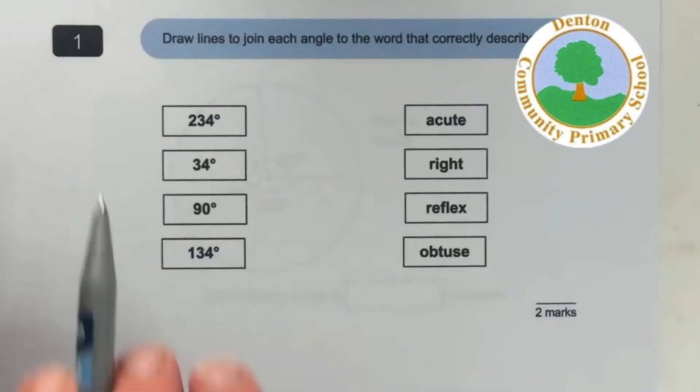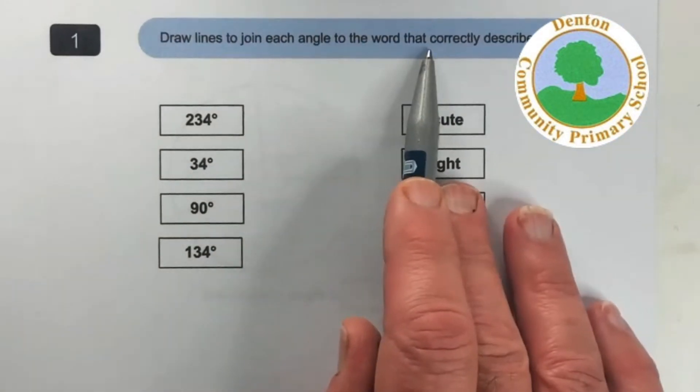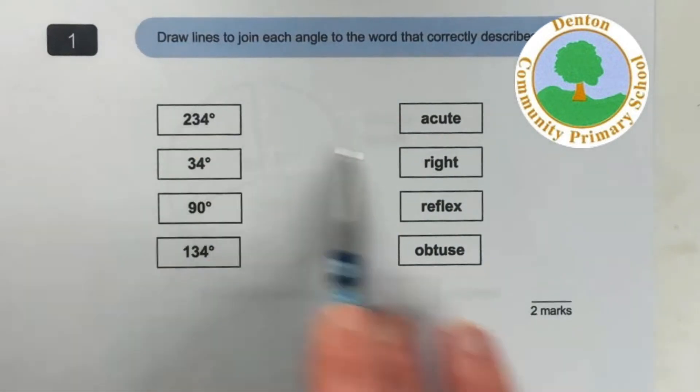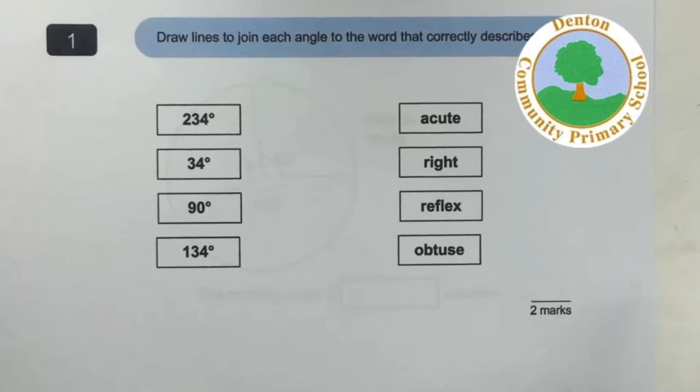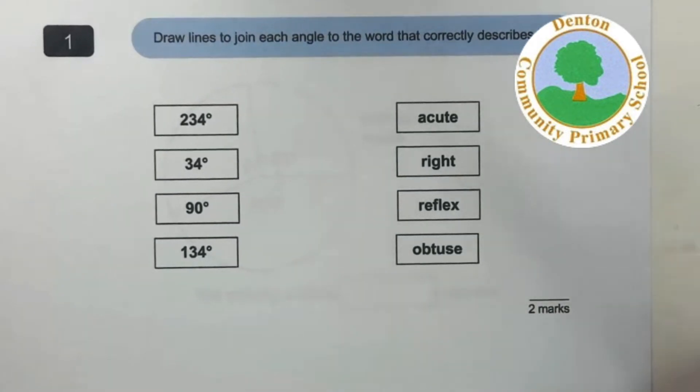Okay, so those are the crucial things, let's dive in. All right, question one, draw a line to join each angle to the word that correctly describes it. So you often get these questions where you have to link things. So let's have a look, we've got acute, right, reflex, and obtuse.